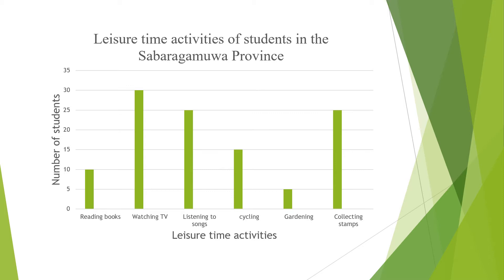Let's have a look at this bar graph. The title of the graph is 'Leisure Time Activities of Students in the Sabaragamuwa Province.' The vertical axis represents the number of students. The horizontal axis represents the leisure time activities.